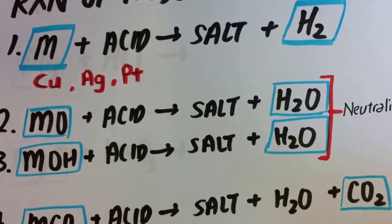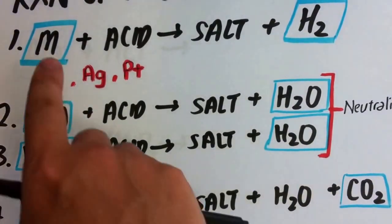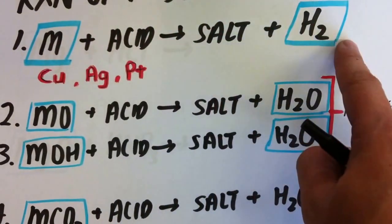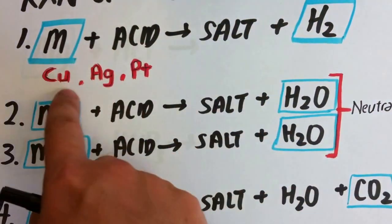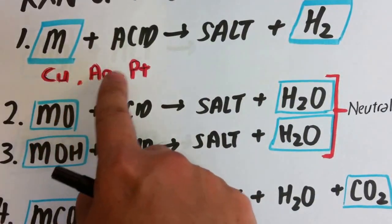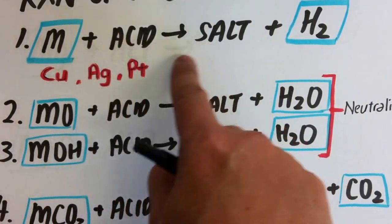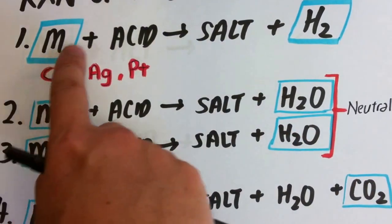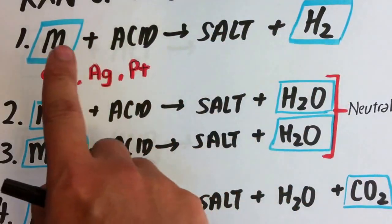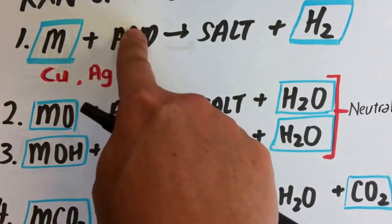These are the four general reactions of acids that you need to know. When a metal reacts with acid, you get salt and hydrogen gas. Three metals do not react with acid: copper, silver, and platinum. When they react with acid, there is basically no reaction. The rest of the metals will react to form salt plus H2, except for these three.